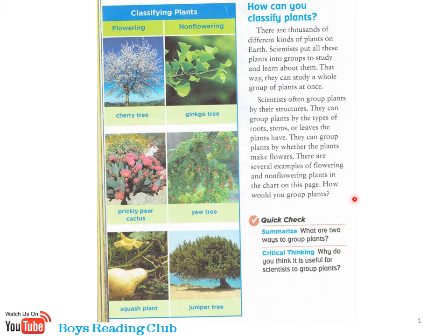How would you group plants? Flowering plants: cherry tree, prickly pear cactus, squash plant. Non-flowering plants: ginkgo tree, yew tree, juniper tree.